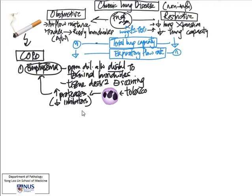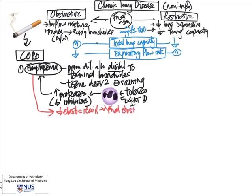Another condition giving rise to emphysema is alpha-1-antitrypsin deficiency, one of the congenital diseases briefly touched on. Alpha-1-antitrypsin is a protease inhibitor, so again there is a relative increase in proteases. What happens in emphysema is that there is decreased elastic recoil of the airways, leading to functional obstruction. There is also a decrease in net gas exchange capacity due to reduced surface area from destruction of the alveolar walls.